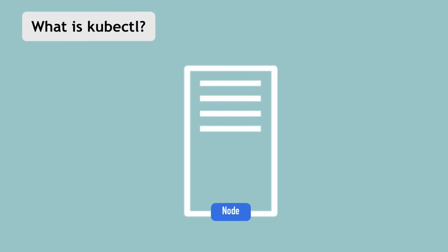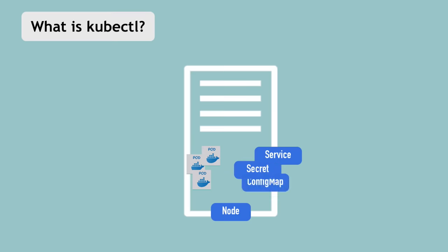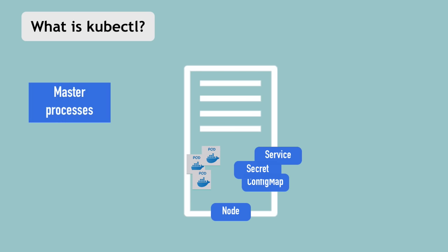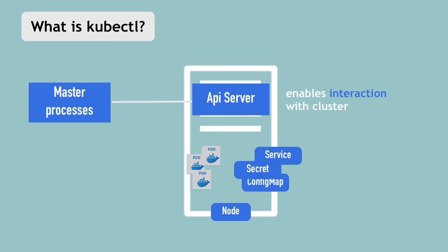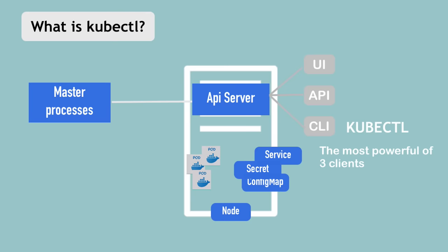Now that you have this virtual node on your local machine representing Minikube, you need a way to create pods and other components on the node. The way to do it is using kubectl, which is a command line tool for the Kubernetes cluster. Remember, Minikube runs both master and worker processes. One of the master processes — the API server — is the main entry point into the Kubernetes cluster. If you want to do anything in Kubernetes, configure anything, or create any component, you first talk to the API server. You can do so through a UI dashboard, the Kubernetes API, or kubectl. kubectl is actually the most powerful of all three clients.